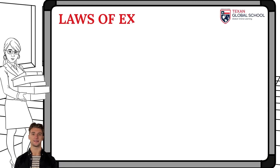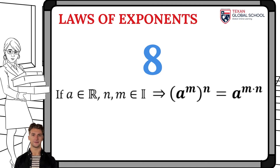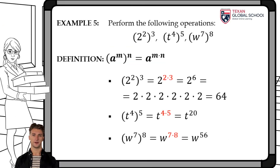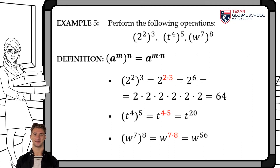This law of exponents indicates that a number raised to the m raised to the n power is equivalent to the product of the exponents m times n. For example, 2 squared cubed can be simplified by multiplying the exponents, thus obtaining 2 raised to the sixth power, which develops to 64. The exercise t to the fourth raised to the fifth power, multiplying its exponents, is equivalent to t raised to the twentieth power. In the last exercise, w raised to the seventh to the eighth power is equivalent to w raised to the fifty-sixth power.